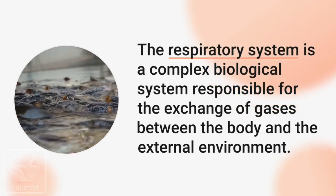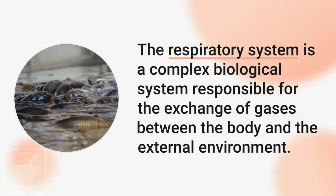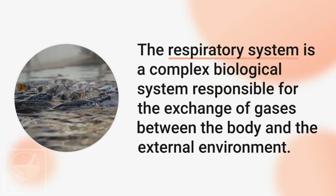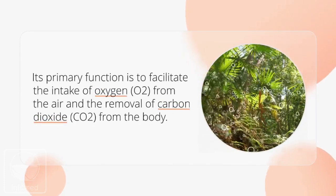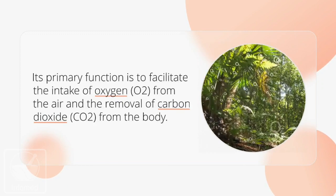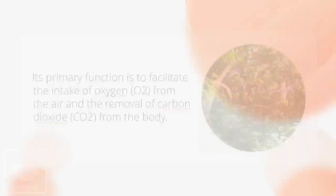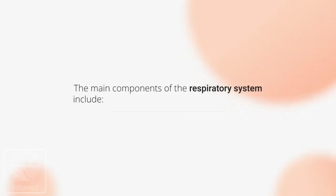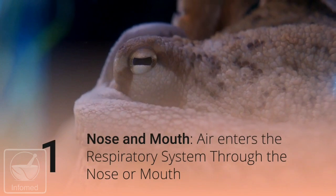The respiratory system is a complex biological system responsible for the exchange of gases between the body and the external environment. Its primary function is to facilitate the intake of oxygen from the air and the removal of carbon dioxide from the body. The main components of the respiratory system include the following.